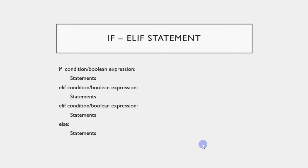I prefer using elif over independent if statements because if I write five if statements in my program the system has to check all five of them even if the first or the second one is true. It will still check the following conditions, but I don't want to waste time checking that. I want as soon as it gets the matching condition it should execute the statements given with it and should stop.